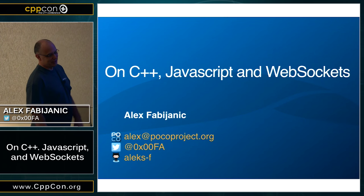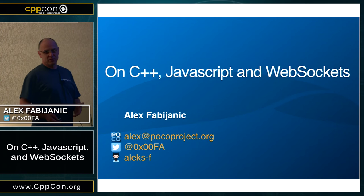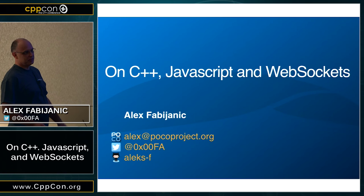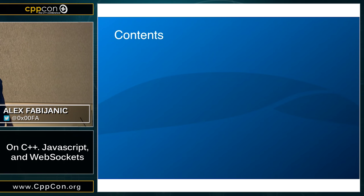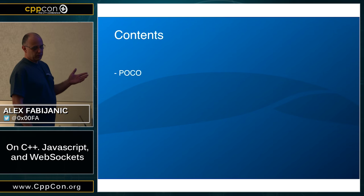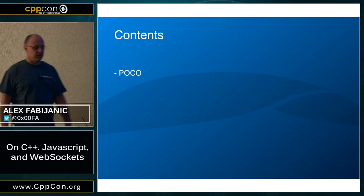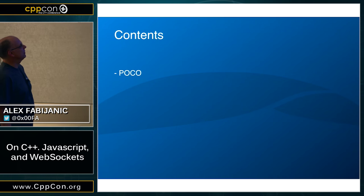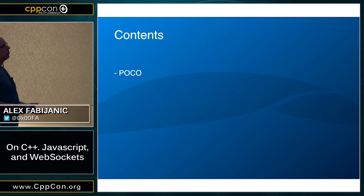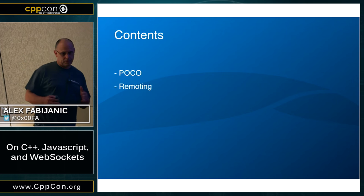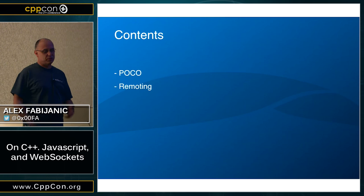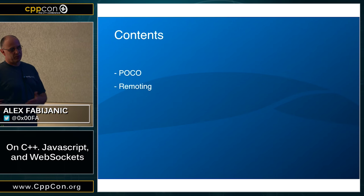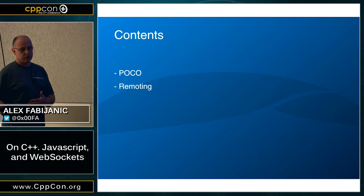As Bjarne Stroustrup likes to say, anything can be done simply if you have a good library in C++. But without a good library, things are very complicated. So what I'm going to talk about today: first I'll give you a little overview of POCO for those not familiar with it, so the rest of you please bear with me. Then we're going to look at the remoting library — a library built on POCO for remoting. It used to be a commercial product from Applied Informatics, from the guy who started POCO, Gunter Oblinsek, and he open sourced it recently.